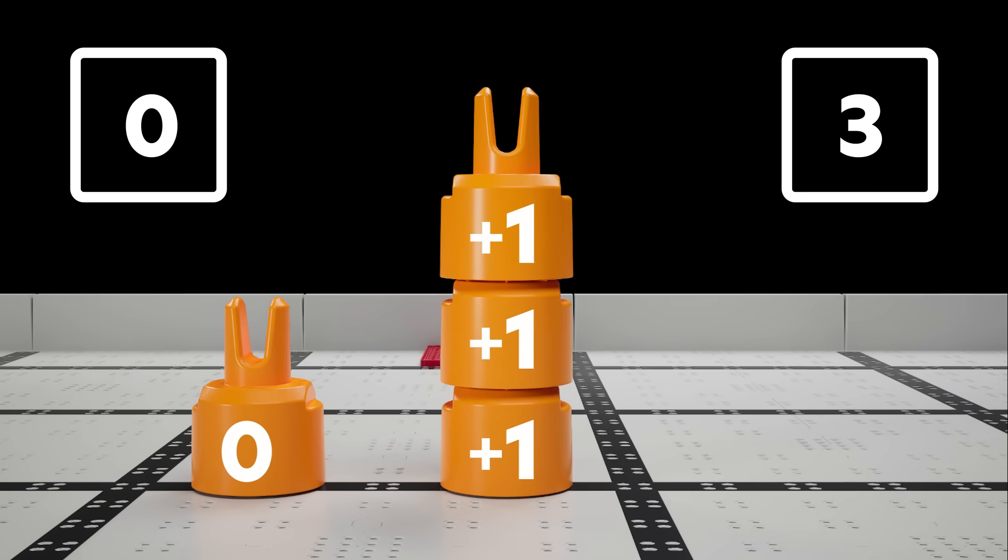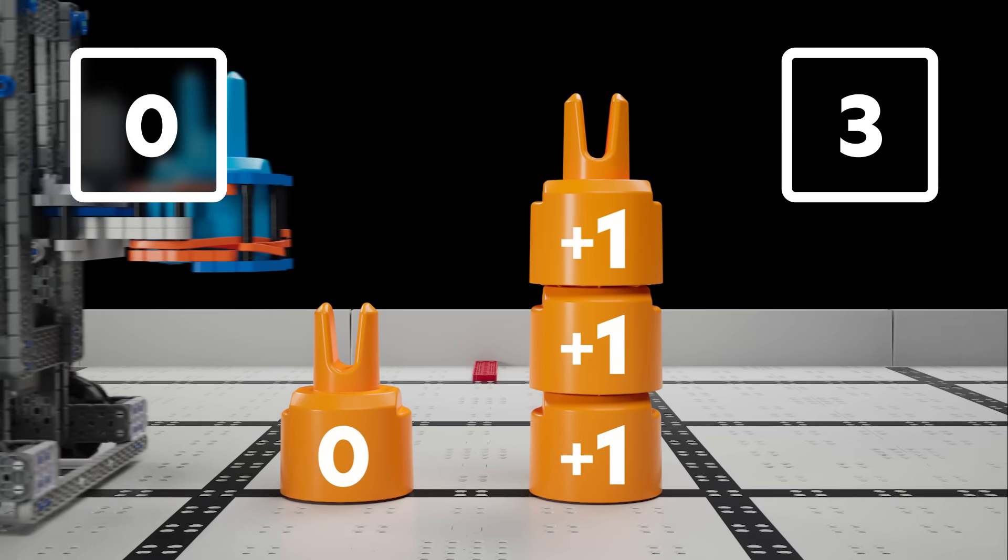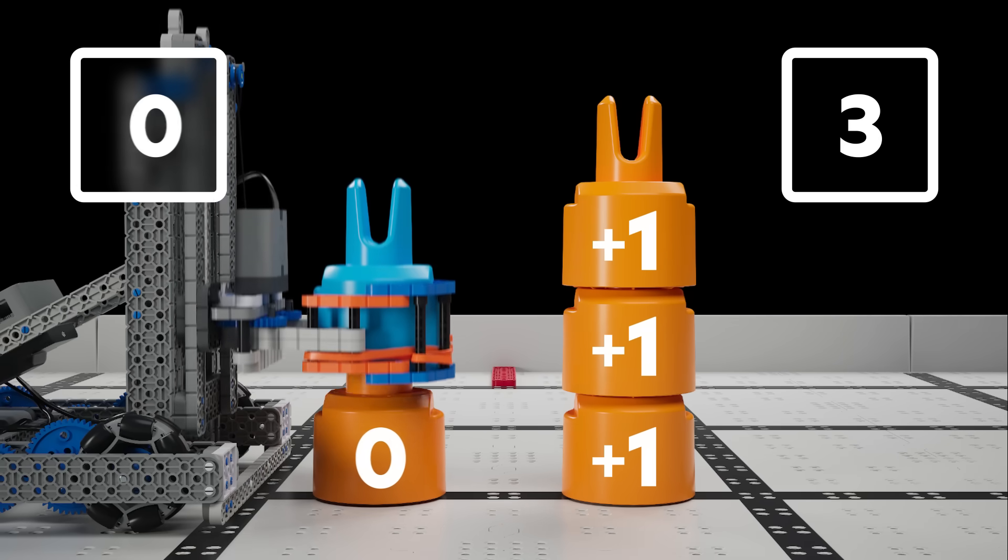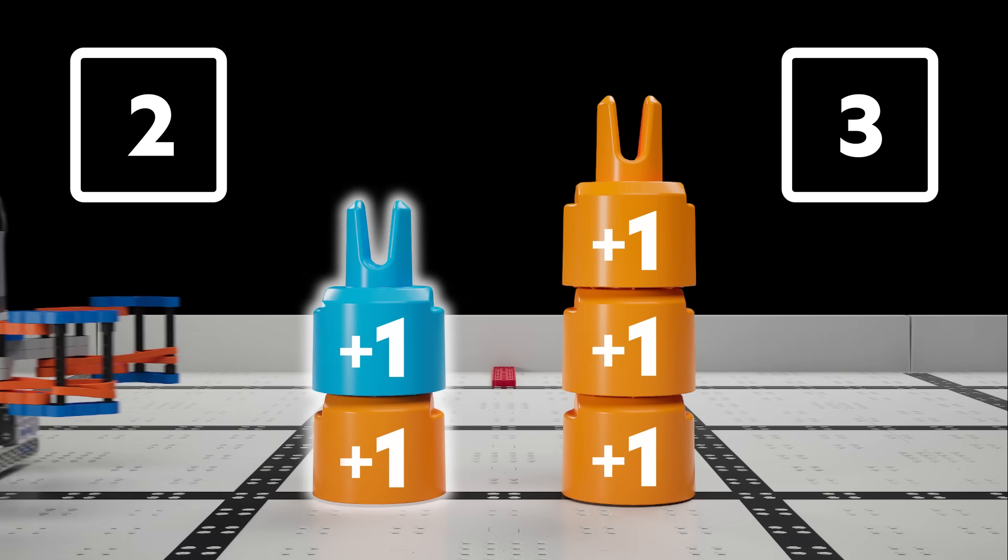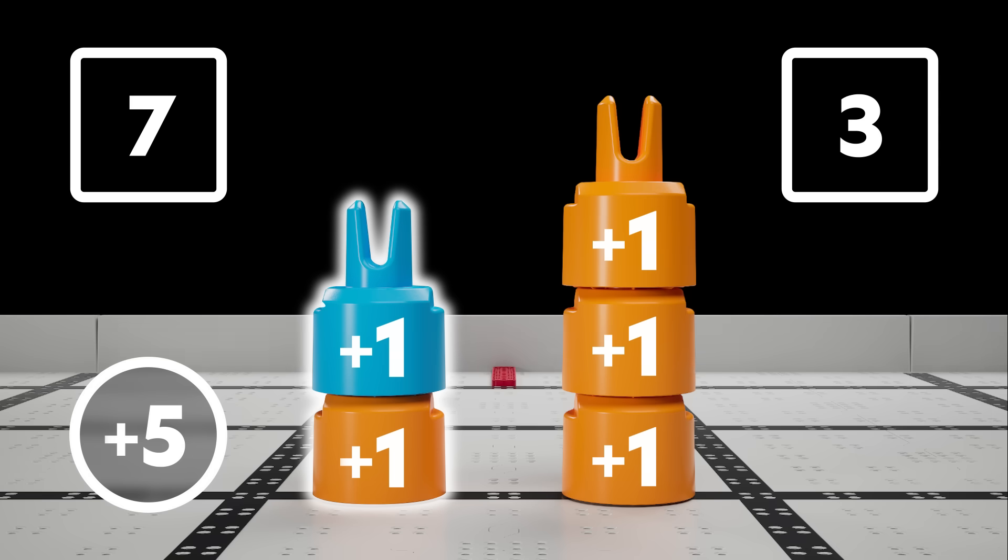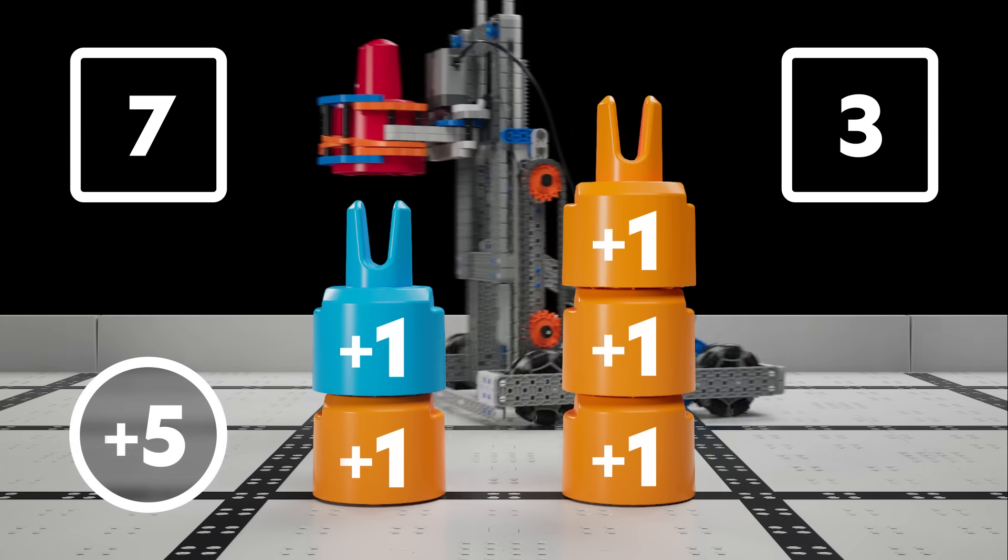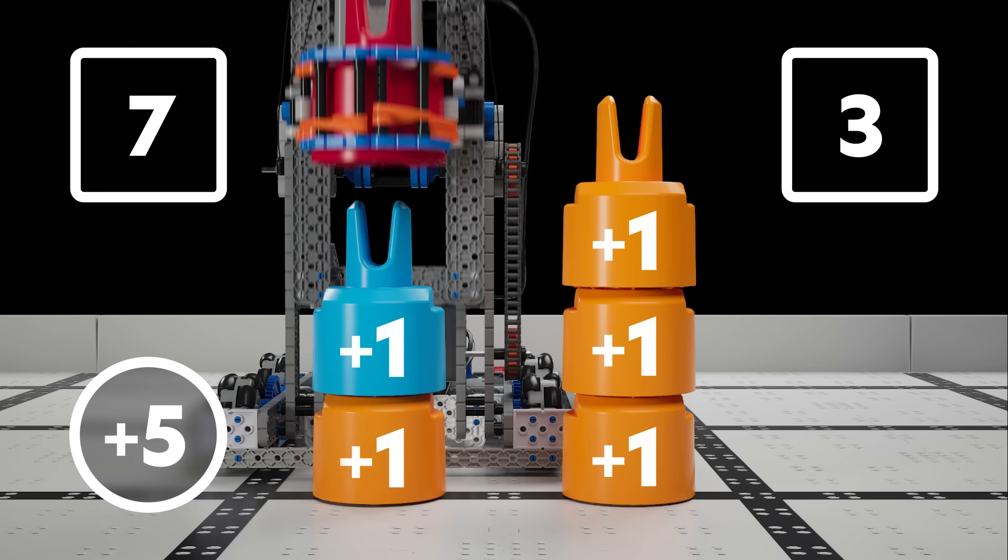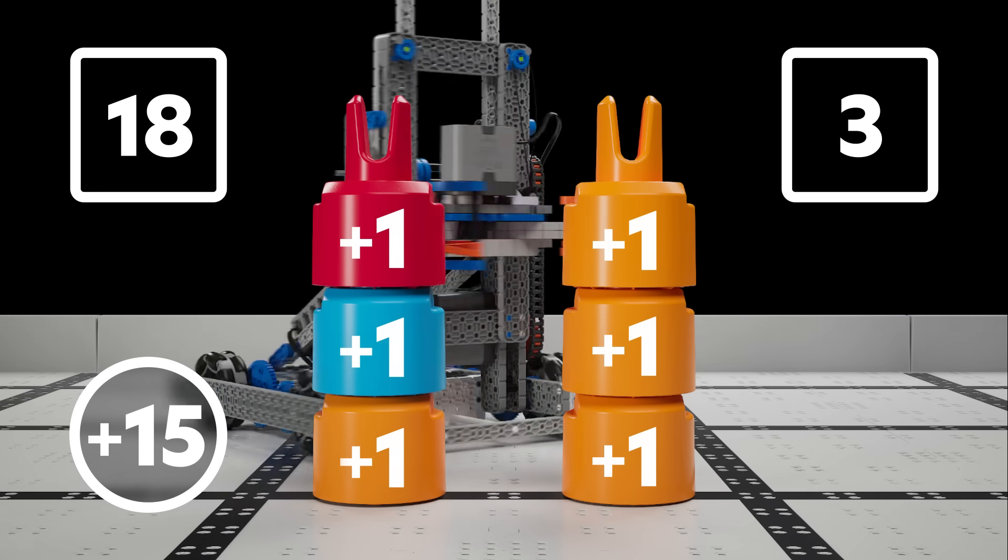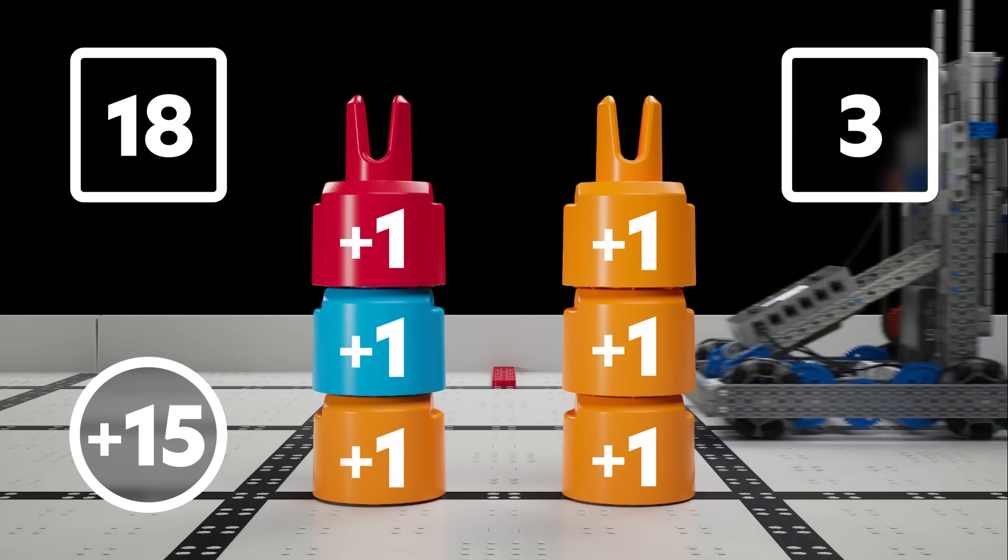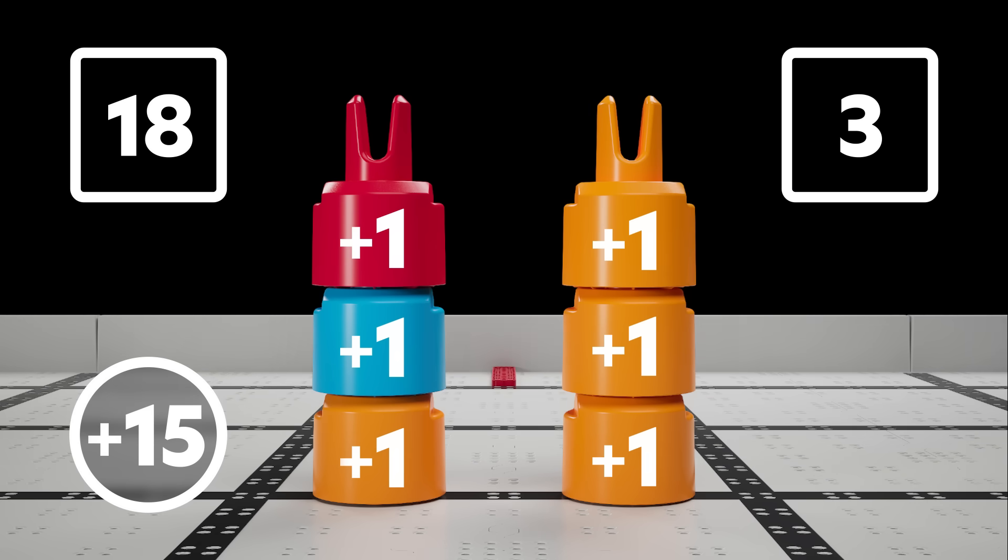However, teams will receive bonus points for stacks consisting of more than one color. For example, a stack that is a mix of two colors is awarded five bonus points and a stack that is a mix of three colors is awarded 15 bonus points. Stacks consisting of only one color receive no bonus points.